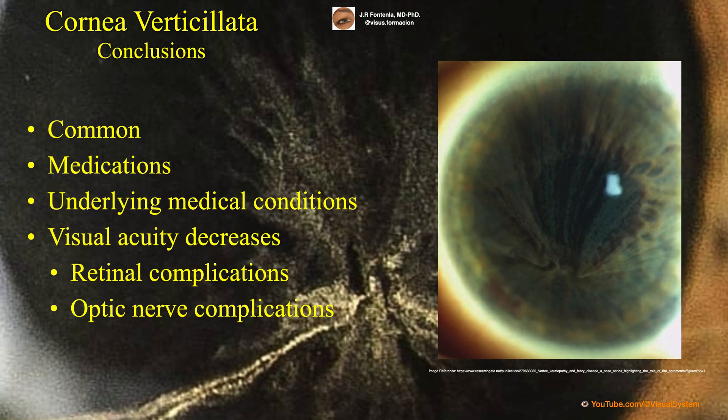In conclusion, we can say that cornea verticillata is a relatively common lesion that can be caused by certain medications or underlying medical conditions. Although it usually does not cause significant visual problems, it is important to follow up in all cases and rule out retinal or optic nerve complications if visual acuity decreases.